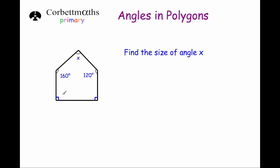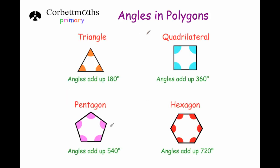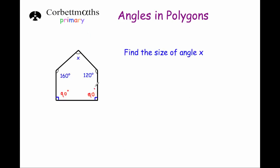The first thing I notice is this pentagon has got two right angles, so I'm going to write 90 degrees there and 90 degrees there, because if it's a right angle it's going to be 90 degrees. Now, to find the missing angle in this pentagon, I know that the five angles in a pentagon add up to 540 degrees.